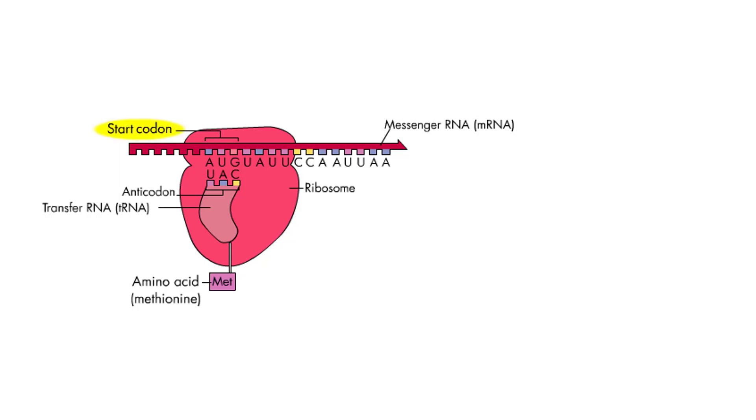Because AUG is nearly always the start codon, and AUG codes for the amino acid methionine, the first amino acid of polypeptides is almost always methionine.